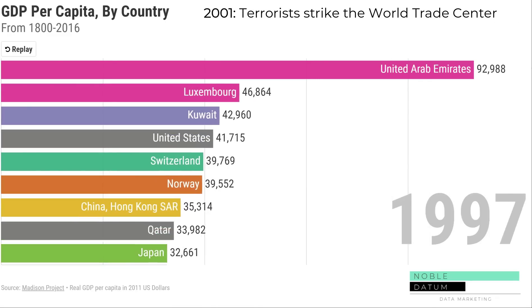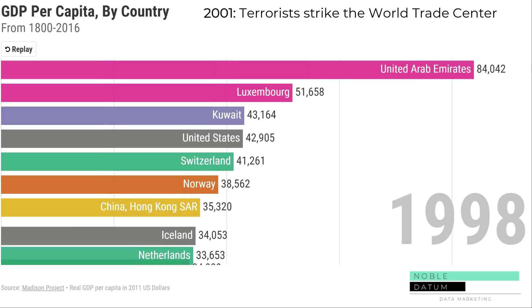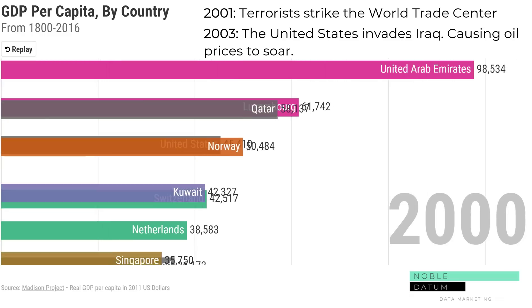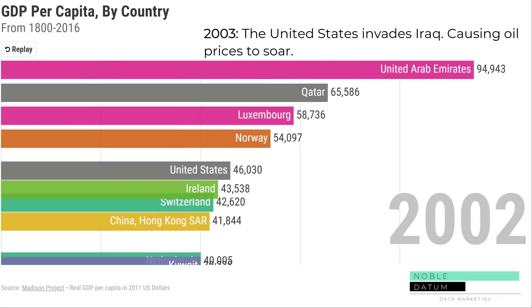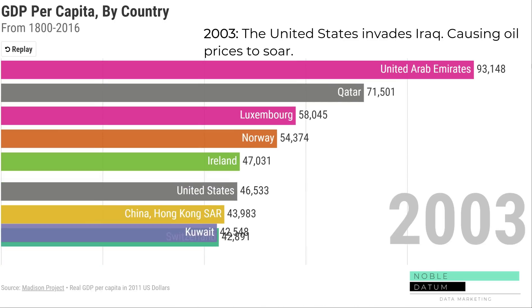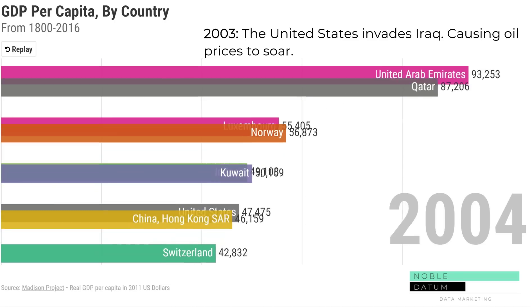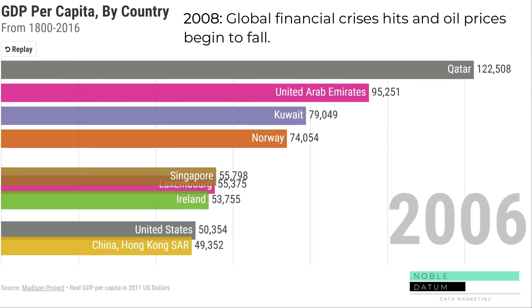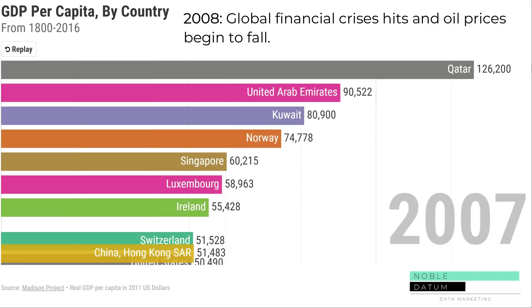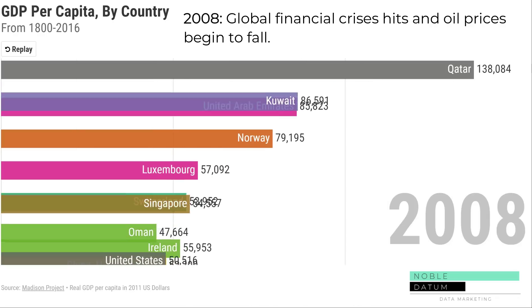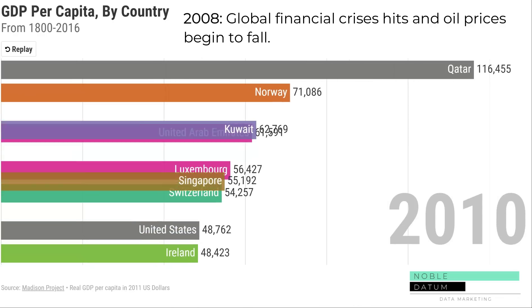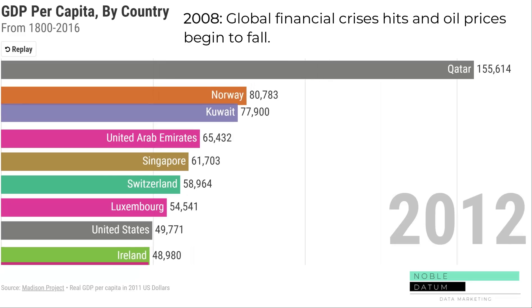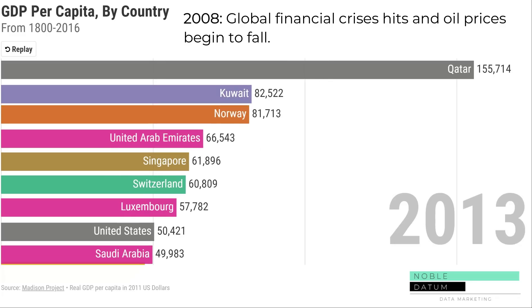On 9/11/2001, terrorists strike the World Trade Center. Two years later the US invades Iraq, making oil prices spike once again. This lasts until the housing market crashes, sparking the global financial crisis, and oil prices begin to fall.